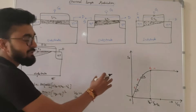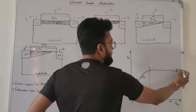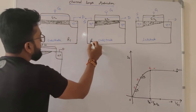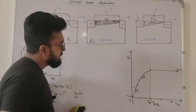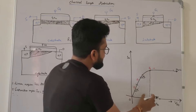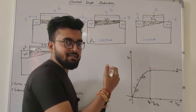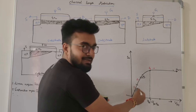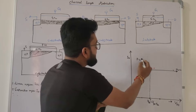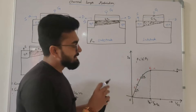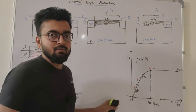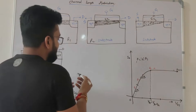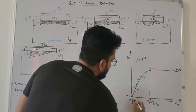This graph is for a fixed VGS. In Region 2, the rate of change of current with respect to drain voltage is decreasing — the current is increasing but the rate at which it increases is slowed down compared to Region 1. This can be seen from the angle: theta 2 is less than theta 1, so the rate of increase of current in R2 is less than in R1.